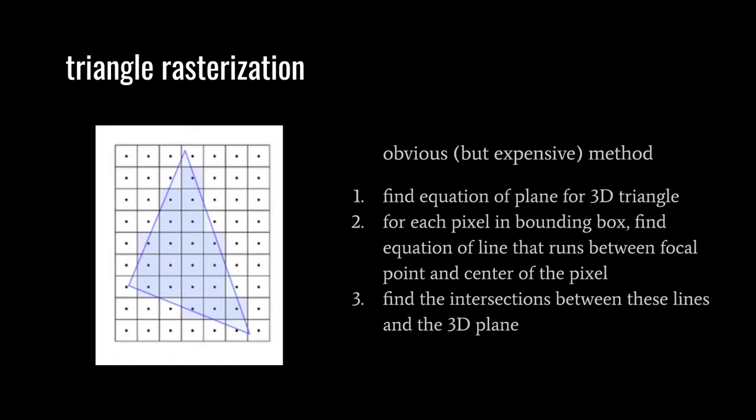So triangle rasterization — how could we do this? There's a fairly obvious solution, which unfortunately is quite expensive. We have three points in 3D space, and given three points you can figure out the planar equation. For each pixel, we can compute the equation of the 3D line running from the focal point through that pixel center, and solve for where X, Y, and Z satisfies both equations. This is doable, but finding the intersection is more expensive than we'd ideally want to pay for each pixel.